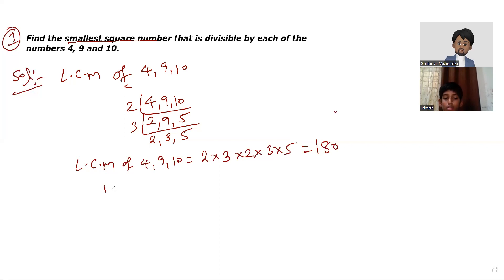So that time what we are going to do? Here 180, we are going to do prime factorization. So then we can understand which smallest number if I multiply with 180 it will become a square number. So now I am going to do prime factorization: 2, 90, again 45.